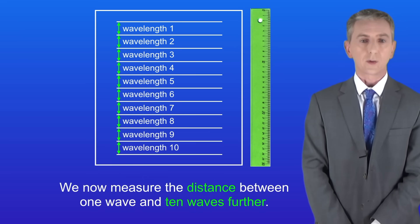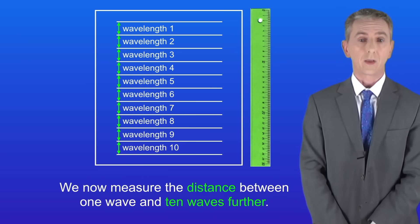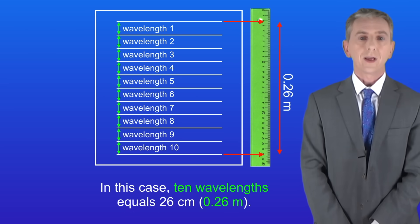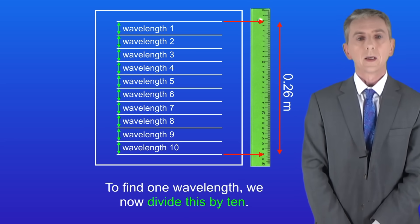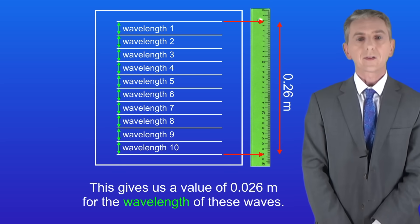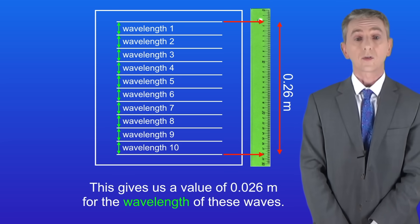We now measure the distance between one wave and 10 waves further, in other words a total of 10 wavelengths. In this case 10 wavelengths equals 26 centimeters, or 0.26 meters. To find one wavelength we divide this by 10. This gives us a value of 0.026 meters for the wavelength of these waves.